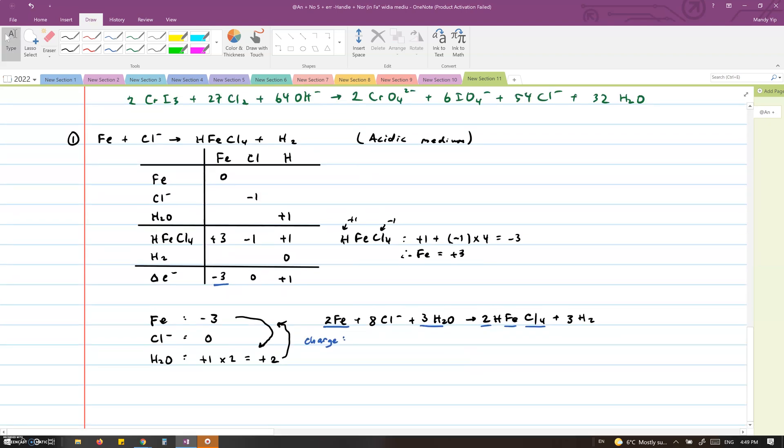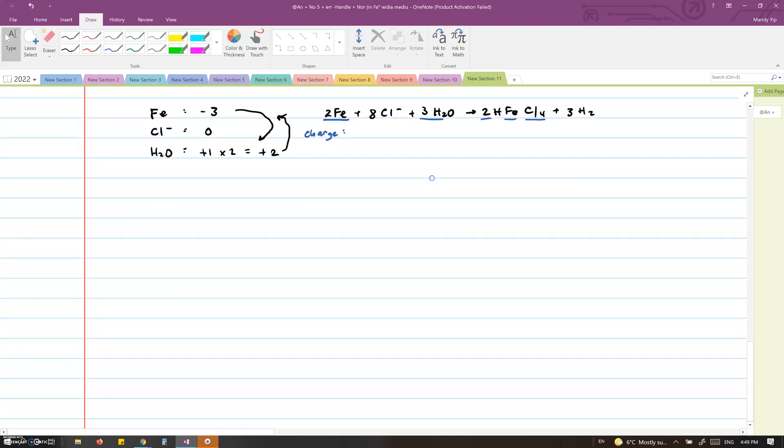Next, we will balance the charge. The left side is minus 8 while the right side is 0. So we will need to add 8H plus to the left-hand side. We will now balance the overall Hs in the reaction. So we have 14 on the left side in total and 8 on the right side. And therefore, we will need to add 3H2Os to the right side. A quick check of oxygen counts, and we will see that this equation is balanced.